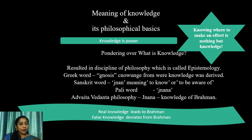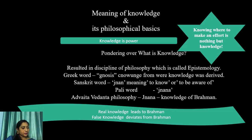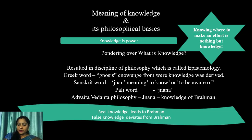Jnana in Advaita Vedanta philosophy has a spiritual connotation and is closely related to the knowledge of Brahman. Real knowledge is that which leads to the knowledge of Brahman, and false knowledge is that which deviates from such transcendent knowledge of Brahman. The dictionary meaning helps us to have more clarity of the term.